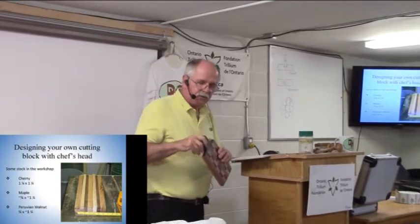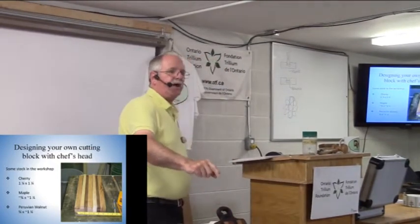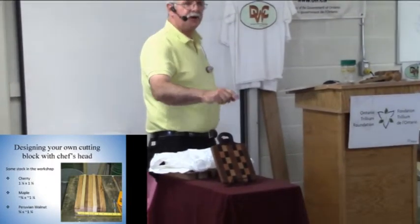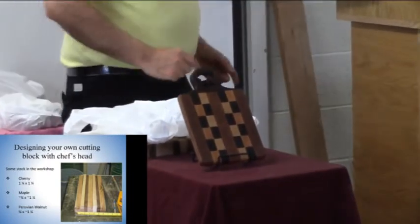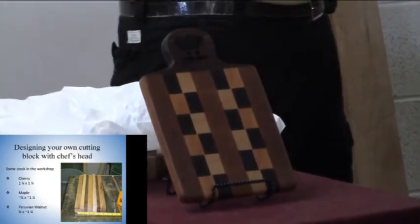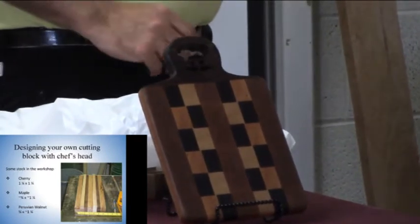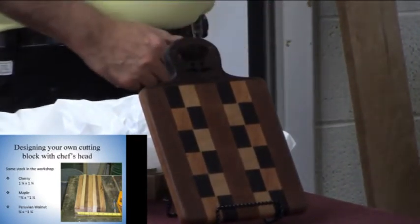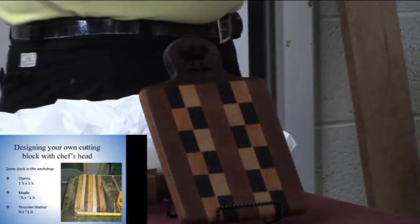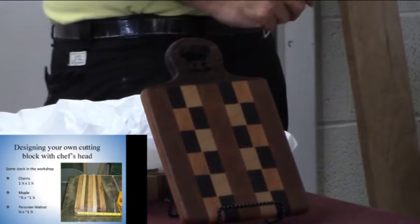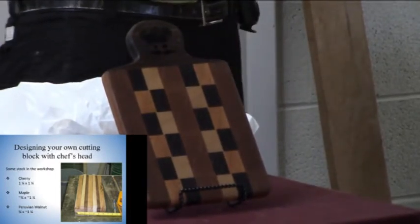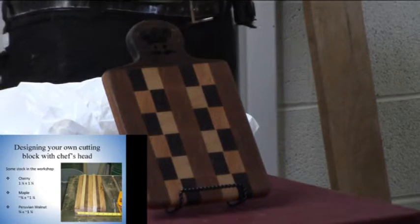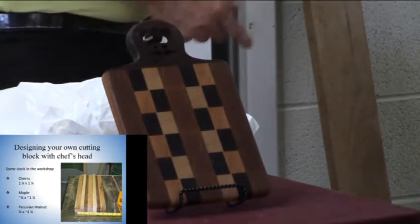So what I'm going to do is, since I got this design, I thought I would go through how I went about designing this one. This is a little different than the first one because I used three different kinds of wood that I had sitting around the shop. I had some cherry that was quarter by quarter, about 18 inches long. I had some maple that was about three quarters by a little more than an inch and a quarter. And I had some Peruvian walnut that I picked up at Rockler in the U.S. Cheap as all get out, four-foot piece was $3.